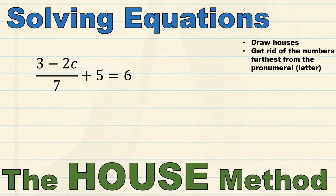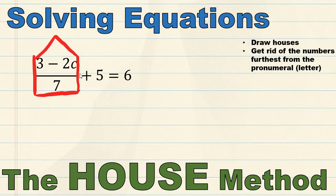Now we move on to our final and hardest equation. When you master the house method, it doesn't matter how complicated the equation is — it seems just as easy as doing a simple one. The only difference is that there are more steps, but they're all the same kind of steps. I've got two terms: a fraction and a plus 5. I'm going to draw my two-storey house around my fraction, and then a separate house around the plus 5. I've got about three numbers all living in the same house as my pronumeral C, and then a single next-door neighbour plus 5. I get rid of the neighbour first — I subtract 5 on both sides.